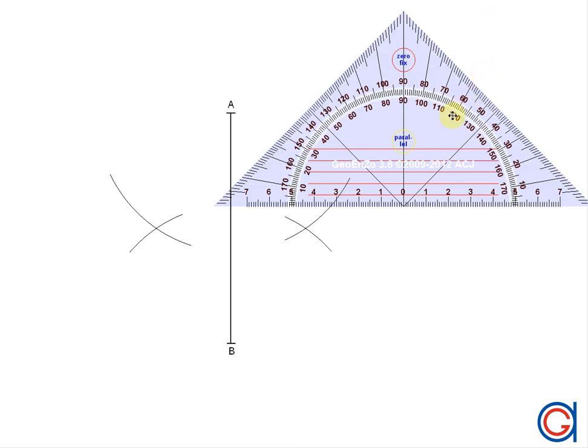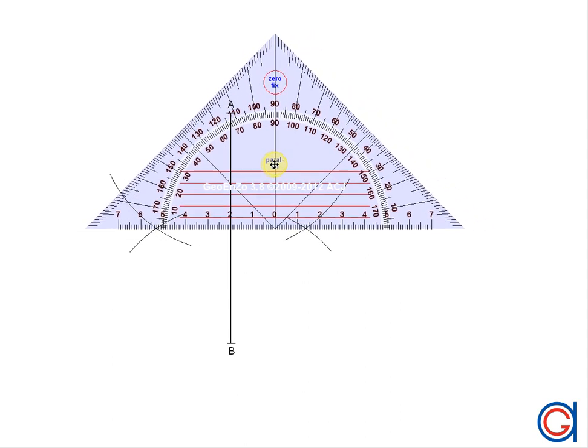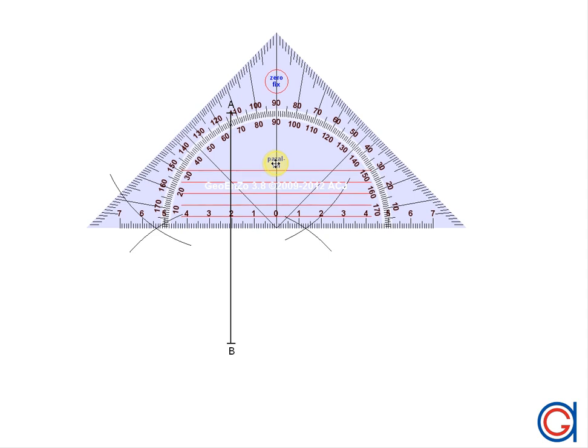So now we draw a horizontal line through these intersections, and where it cuts the vertical line is the midpoint O of the given axis AB, as can be seen here.